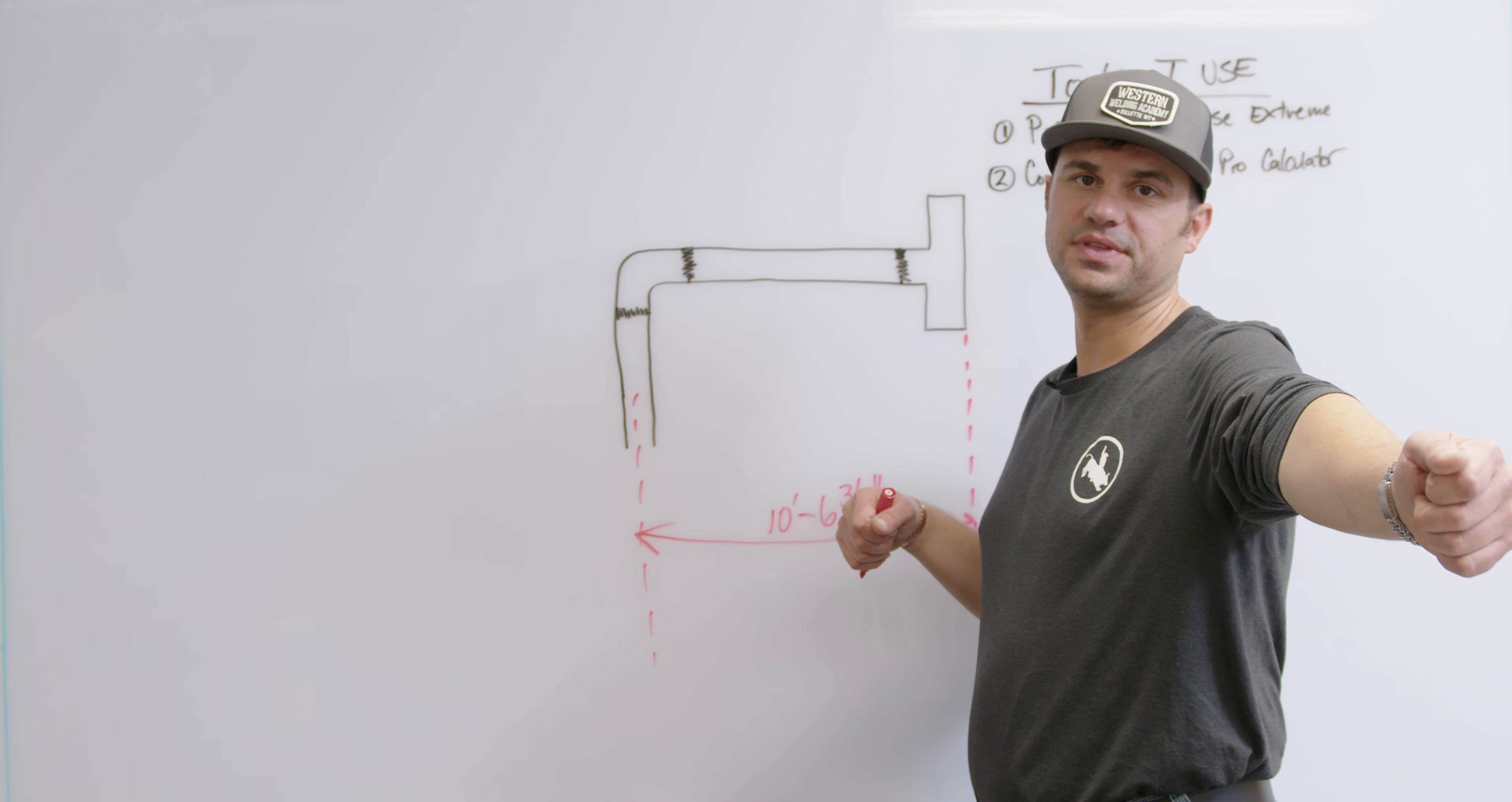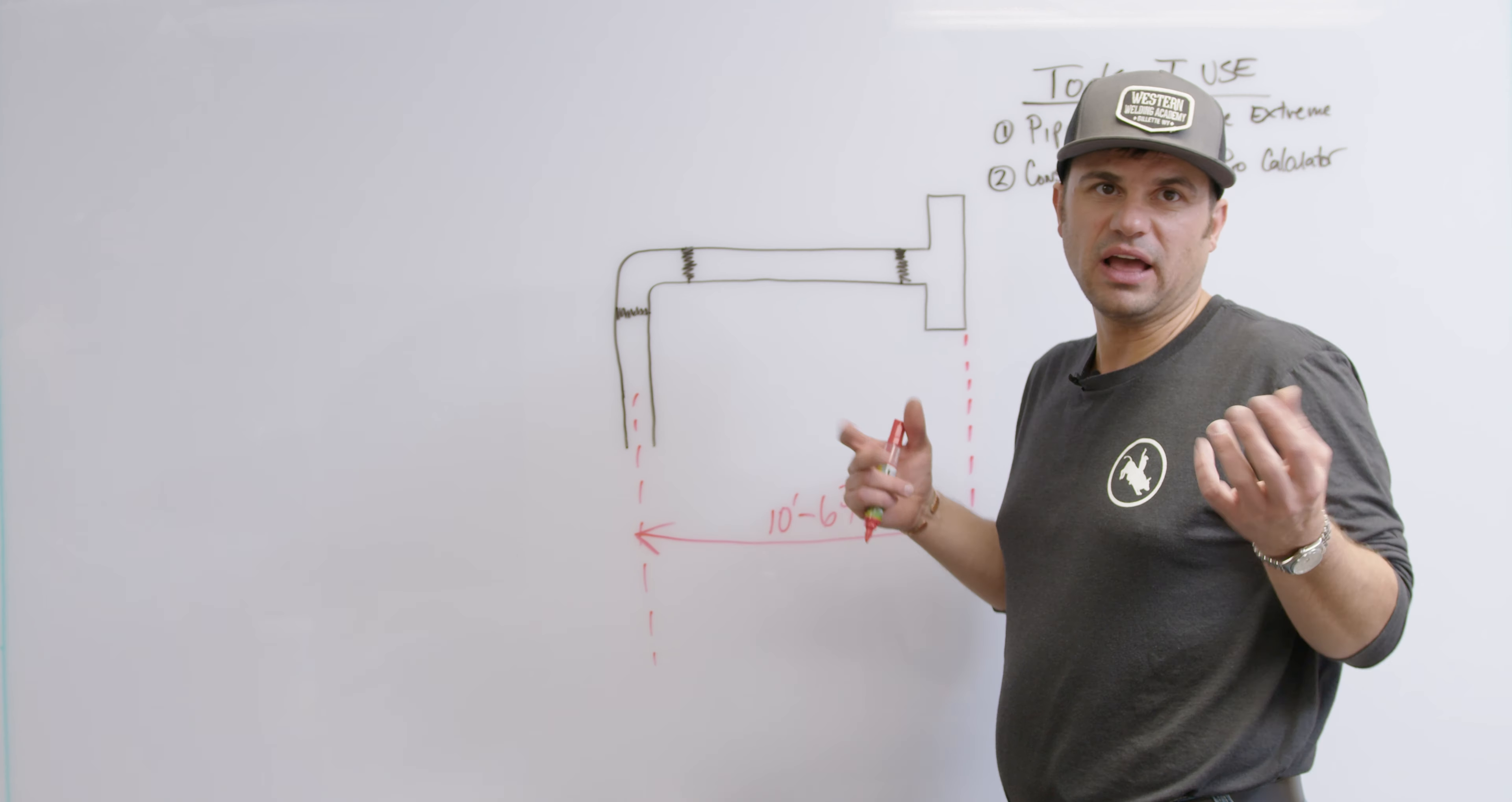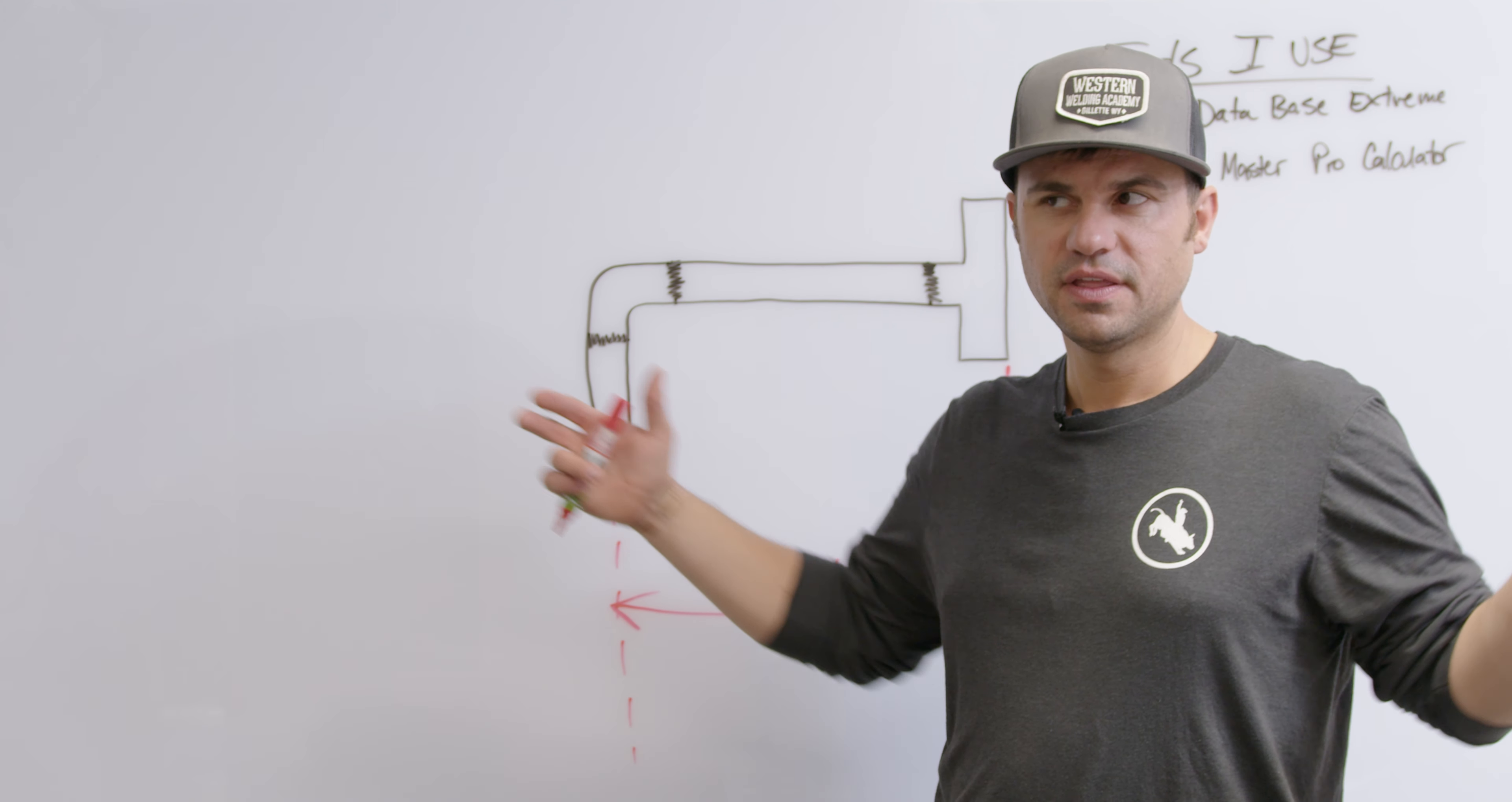So we're talking about the face of the flange to the center of the pipe and the engineer is going to give us a dimension from center to face and just for easy math I'm going to say this is 10 foot 6 and three quarter inches.